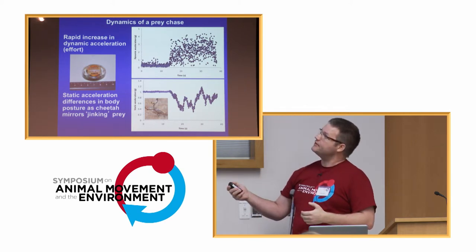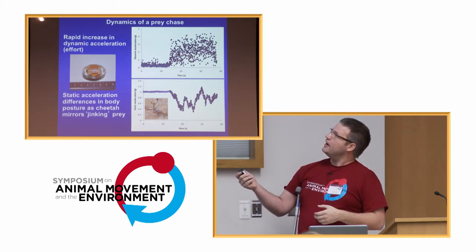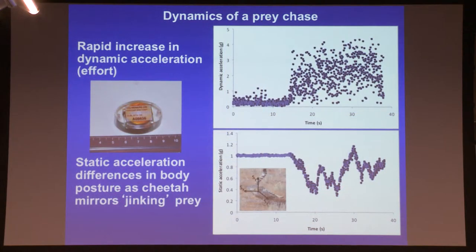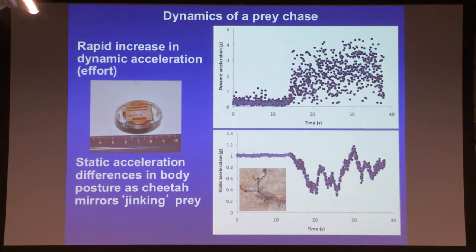The accelerometers collected data on three axes — X, Y, and Z. We smooth this data, and you can subtract the smoothed data from the raw data and summarize the vectorial sums.